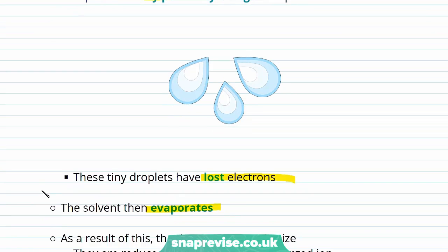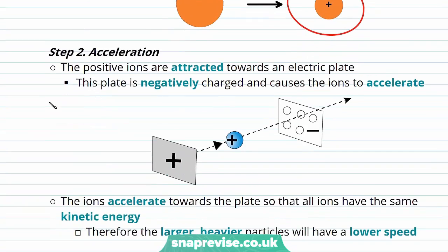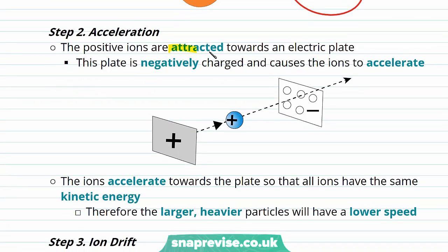The volatile solvent then evaporates from our tiny droplets and as a result the droplets reduce in size. They become smaller and smaller until they reduce to a single positively charged ion. These tiny positively charged ions that we've produced are then attracted towards an electric plate. Now this electric plate is negatively charged and it causes our ions to accelerate.